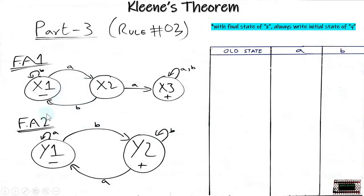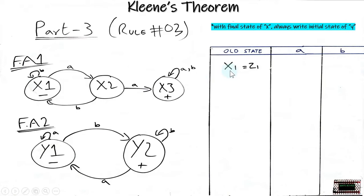We have two given finite automata, FA1 and FA2, and we will draw a transition table with three columns to prove this theorem. The first column is the old state column, and the other two columns are the characters present in our finite automata. We start by writing the name of the first state, x1 of FA1, and name it z1. From x1, when the input is 'a', it goes to x2, so we write x2 and name it z2.